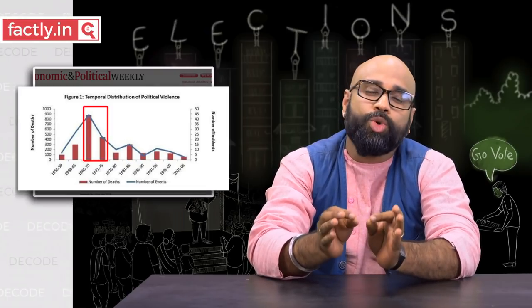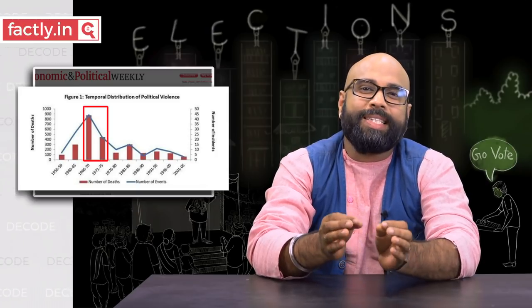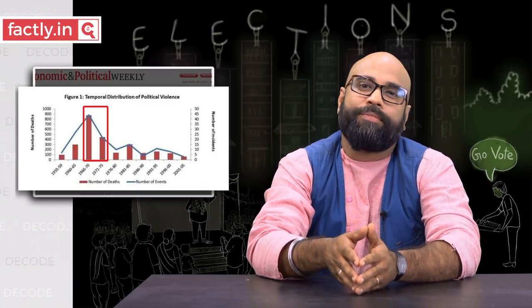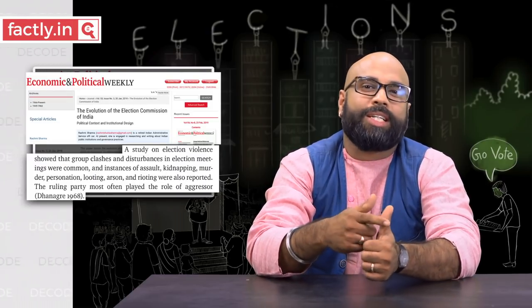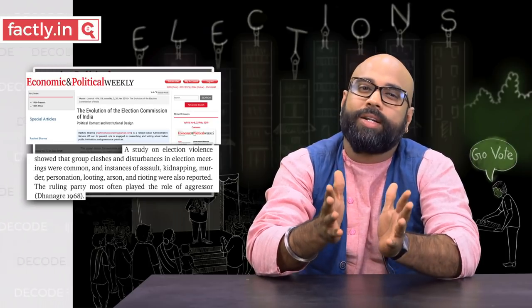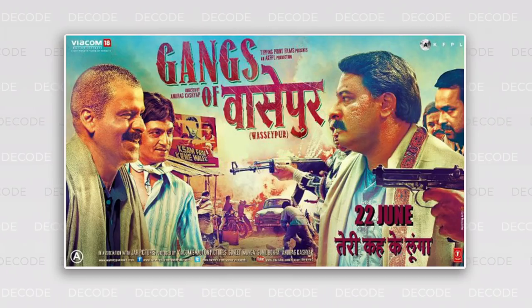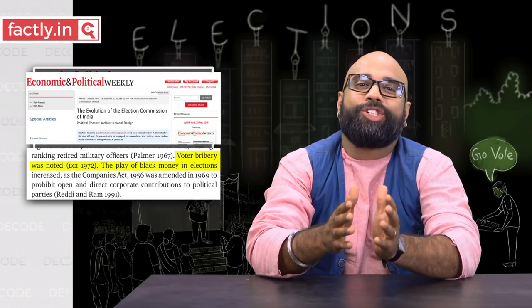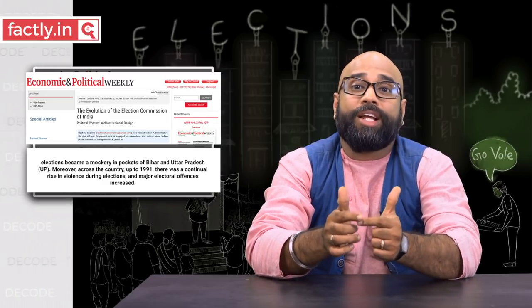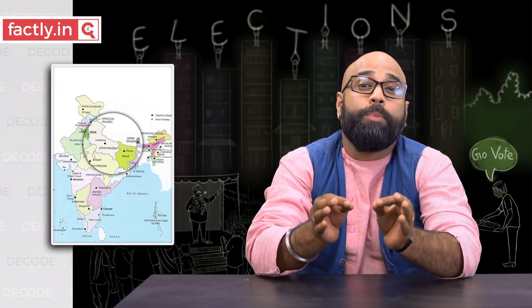That said, it wasn't a smooth ride all along. 1970 to 1991 was a troublesome period for elections. Election violence had become quite common, and instances of assault, kidnapping, murder, looting, arson and rioting occurred in several places. Malpractices like voter bribery and black money in elections increased as well. Disregard for election rules was very high, especially in Bihar and UP. The situation there was so bad that a term so peculiar as 'peaceful vote capturing' came into usage — like two robbery gangs sharing their loots peacefully.